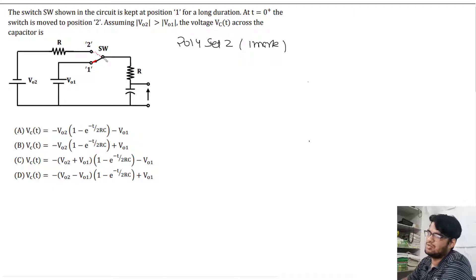It's straightforward - finally the capacitor will be open circuit. Initially in steady state, Vc(0-) will be equal to V01. And Vc(∞) will be equal to minus V02.